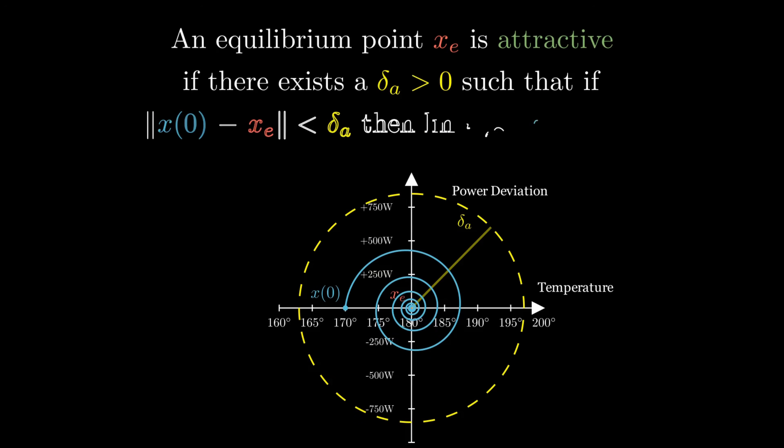An equilibrium point xe is attractive if there exists a δA such that all trajectories that start δA-close to the equilibrium point will eventually converge to the equilibrium point. The region inside the yellow boundary is called a region of attraction, as all initial states in this region generate a motion that will be attracted to the equilibrium point. We already saw that an equilibrium can be stable but not attractive. Likewise, an equilibrium can be attractive but not stable — this second fact is illustrated with an example.